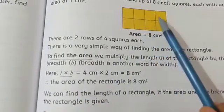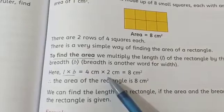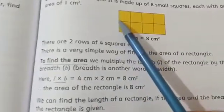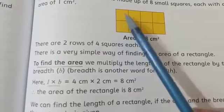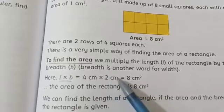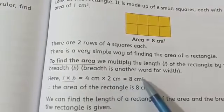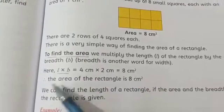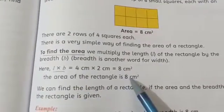So length is how much we have. One, two, three, four. 4 cm. And breadth is how much. Because this is 1 cm². So how much we have. 2 cm. So the sides are 4 cm and 2 cm. Therefore the area of a rectangle is 8 cm².